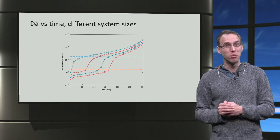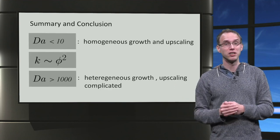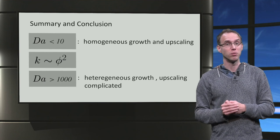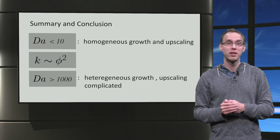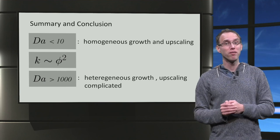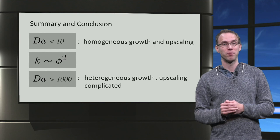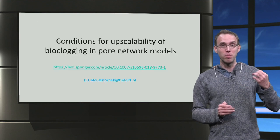Damköhler below 10, then homogeneous growth and upscaling is possible, and then we can use the relation K proportional to phi squared to compute permeabilities in terms of effective porosity in an upscaled system. Damköhler above 1000, leads to heterogeneous growth and upscaling is possible, but complicated.